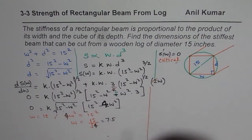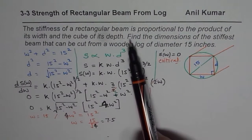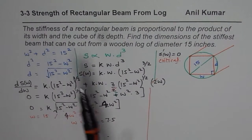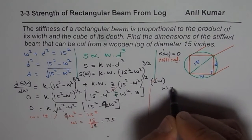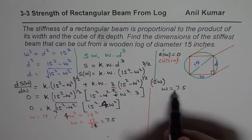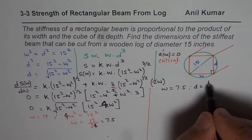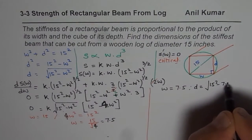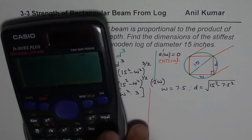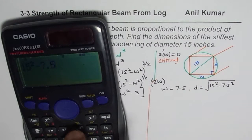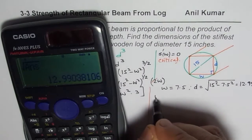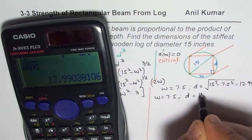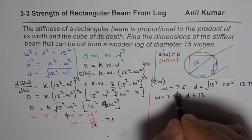The question asks for the dimensions, so we now find depth. Substituting W = 7.5 into D = √(15² − W²): D = √(225 − 56.25) = √168.75 ≈ 12.99, approximately 13 inches. So the width is 7.5 inches and depth is approximately 13 inches.